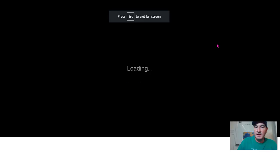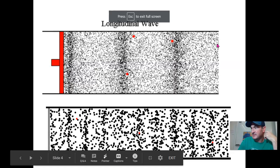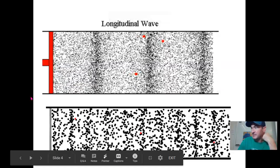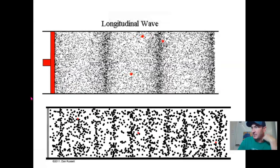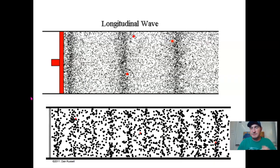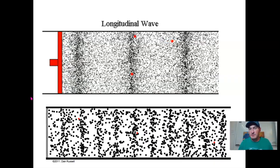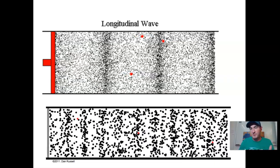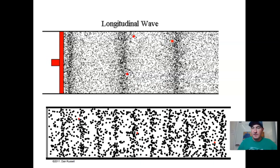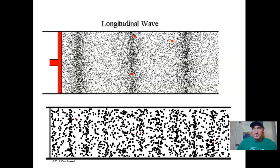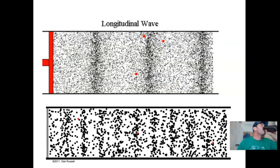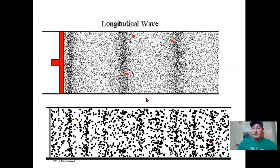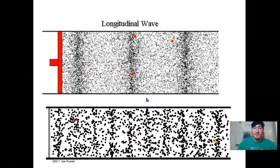What is a wave? It's really just a transfer of energy — it could be a transfer of energy through the motion of particles. Waves are really just a transfer of energy. Now let's move on to our next type of wave, called a transverse wave.